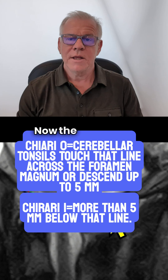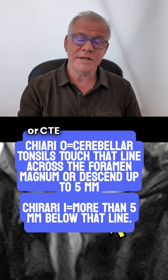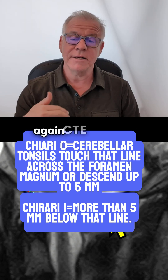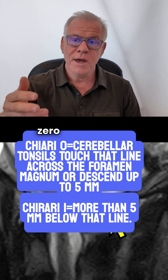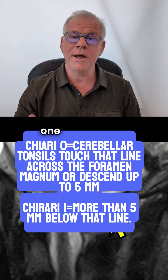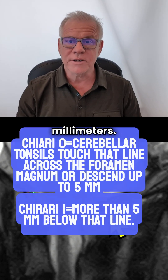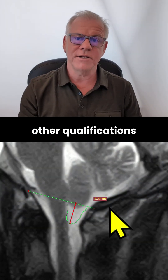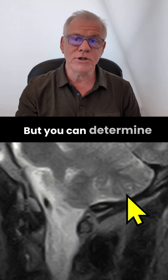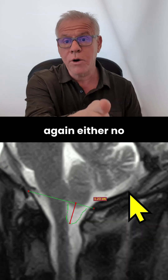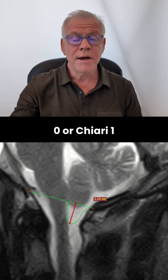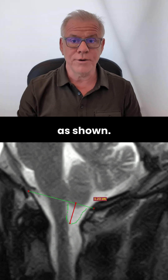Now, the difference between Chiari 0 or CTE and Chiari 1 — again, CTE or Chiari 0 is less than 5 millimeters, Chiari 1 is more than 5 millimeters. And then there are other qualifications for Chiari 2, et cetera. But you can determine either no Chiari, or Chiari 0, or Chiari 1 by looking at the MRI as shown.